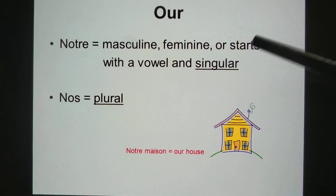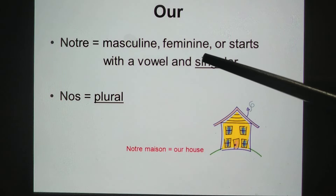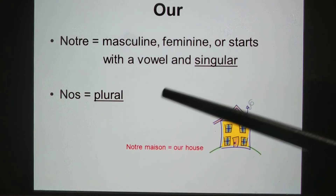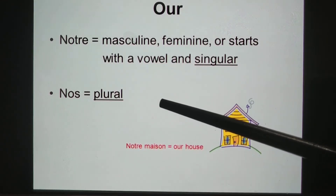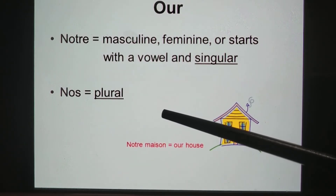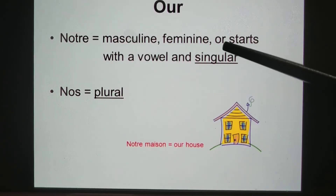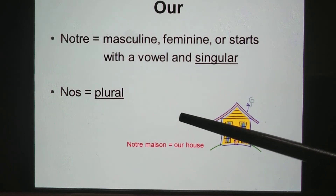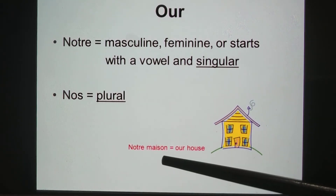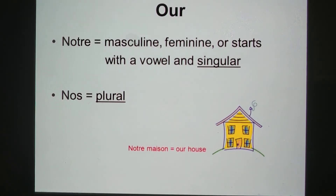For 'our,' we have notre and nos. Notre is used for masculine, feminine, or nouns starting with a vowel, but in singular form. Nos is used for plural. Examples: notre père — père is masculine; notre mère — mère is feminine; notre image — starting with a vowel. For plural, nos parents. Example: 'notre maison' — maison is feminine singular, so we use notre — meaning our house.